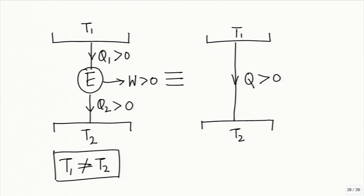Now, the next step: here we have seen the equivalence of an engine working between two distinct temperatures in a particular way and the direction in which heat is transferred between two reservoirs at distinct temperatures. Now, what happens if we have three distinct reservoirs — three reservoirs at three distinct temperatures? Later you can extend it to four reservoirs, five reservoirs, as many as you like.